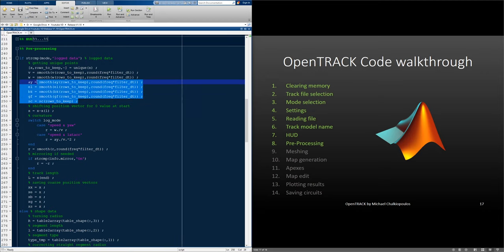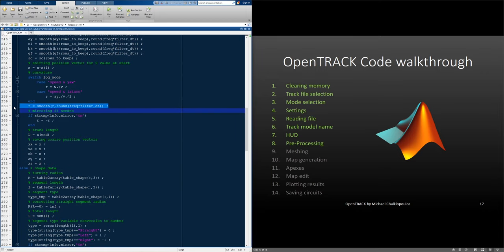Then, we remove the needed rows and filter each variable accordingly. Here, we shift the x-axis in case the first point is not zero. And here is where we calculate our curvature depending on the value of the log mode. Then, we filter the curvature again. You can remove this line if you think there is too much filtering going on.